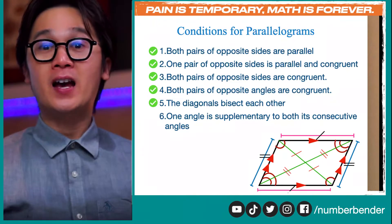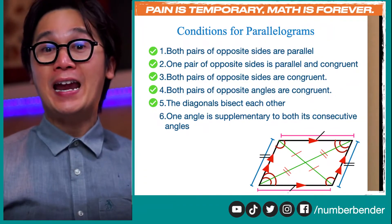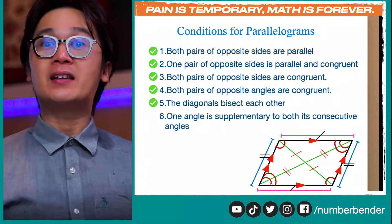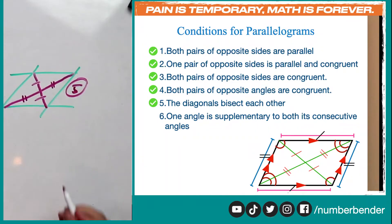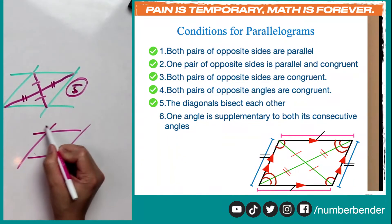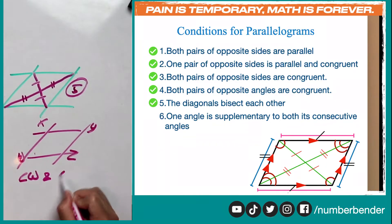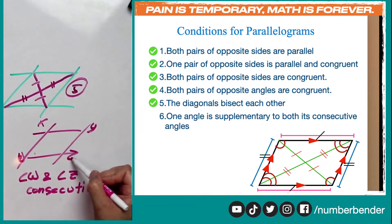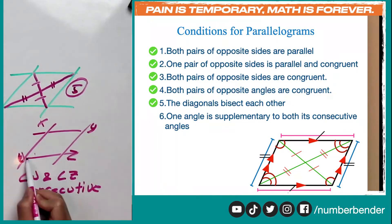For the last condition, we're looking at supplementary and consecutive angles. If one angle is supplementary to both of its consecutive angles, then the quadrilateral is considered to be a parallelogram. To visualize this, let's say we have a quadrilateral with angles X, Y, Z, and W. Consecutive angles — like W and Z — are right next to each other, but X and Z are not consecutive, they are opposite. So we just need to prove that the consecutive angles are supplementary.